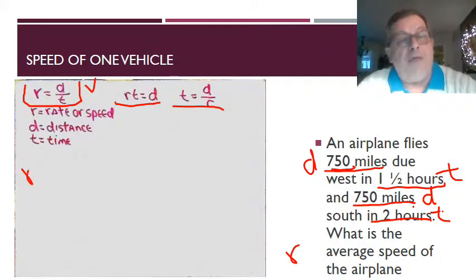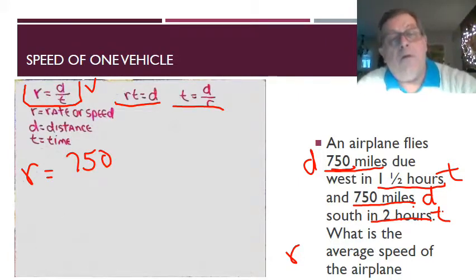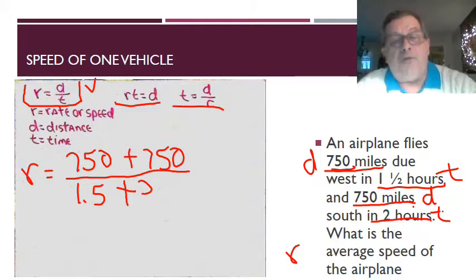So we're asked to find what the average speed is, or the rate. We've gone 750 miles west plus we travel 750 miles south, and we put all that over, well when it was traveling west it was going for one and a half hours, I'm gonna put 1.5, that's the same as one and a half hours. And when it was traveling south for 750 miles, well it traveled for an amount of time of two hours.